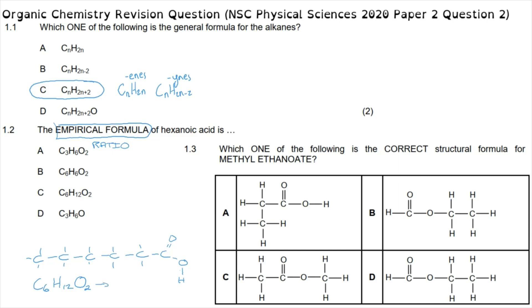The simplest ratio for hexanoic acid is C₃H₆O, obtained by dividing the number of each atom by two. So the correct option for 1.2 is option D — the empirical formula for hexanoic acid is C₃H₆O. Question 1.3 then asks which one of the following is the correct structural formula for methyl ethanoate.